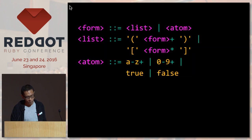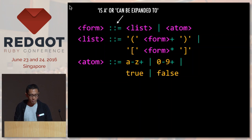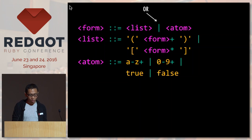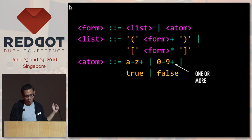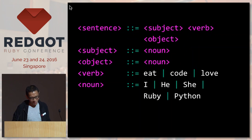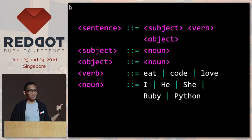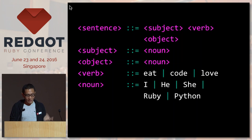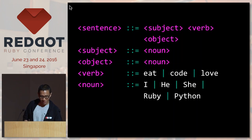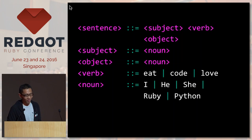We have three lines, each representing a rule. The ::= operator means 'can be expanded to.' The pipe operator means 'or,' the plus operator means 'one or more,' and the star operator means 'zero or more.' To give an example using English: a sentence can be expanded to a subject followed by a verb followed by an object. A subject is a noun, same for an object. A verb can be eat, code, or love. Nouns can be I, he, she, Ruby, or Python. So sentences this grammar accepts include 'I love Ruby' or 'He eats Python.'